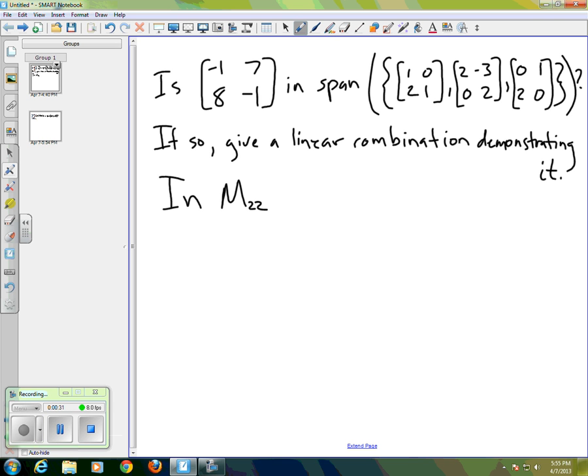we're asking whether there's a linear combination of those three that equals our matrix of interest, negative 1, 7, 8, negative 1. So the question is,